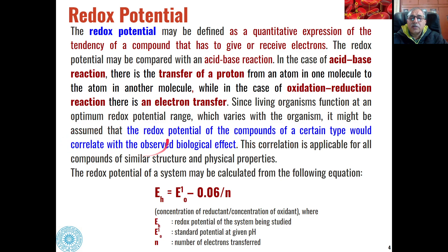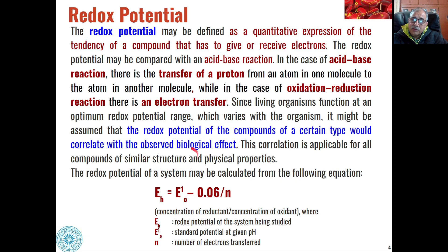The redox potential of compounds of a certain type can be correlated with observed biological activity, because living organisms function at an optimum redox potential range. This range varies with the organism, and this correlation is applicable to all compounds of similar structure and physical properties.